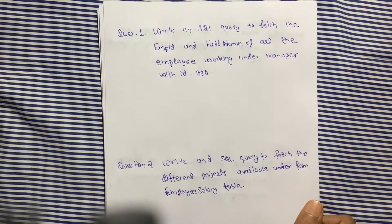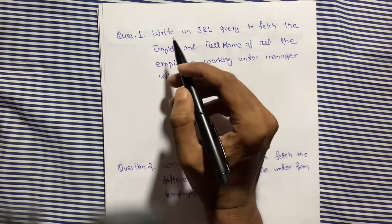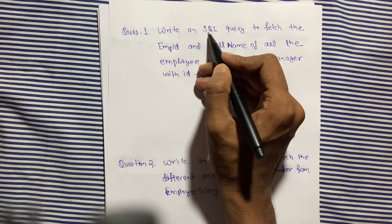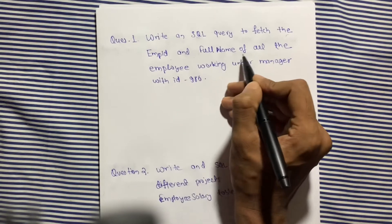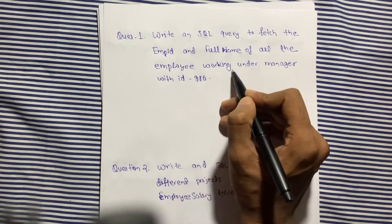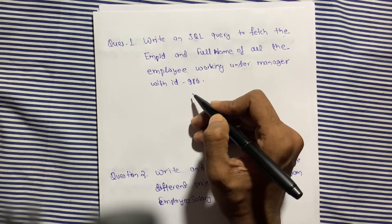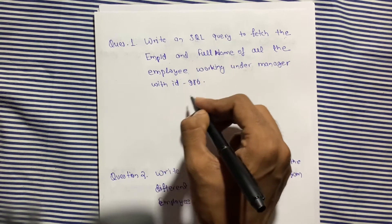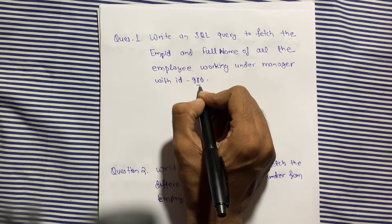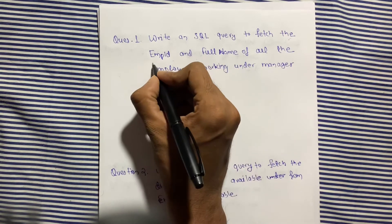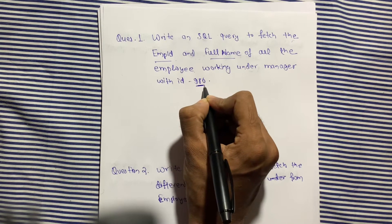We are going to see SQL queries — five interview questions. The first question is: write an SQL query to fetch the employee ID and full name of all employees working under the manager with ID 986. We have to fetch employee details — like who is working under this manager — and the condition is working under manager ID 986.